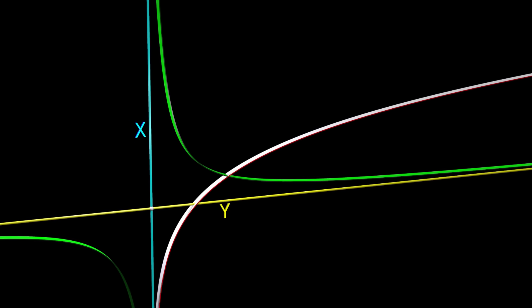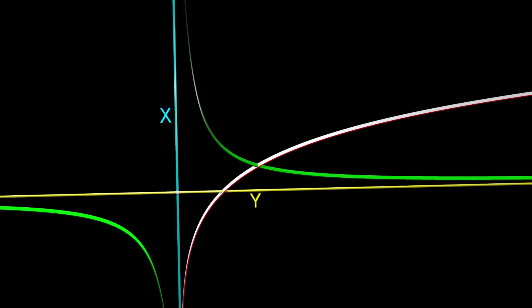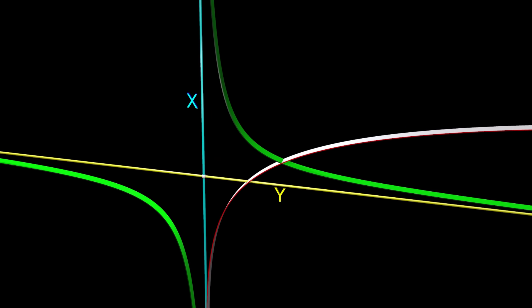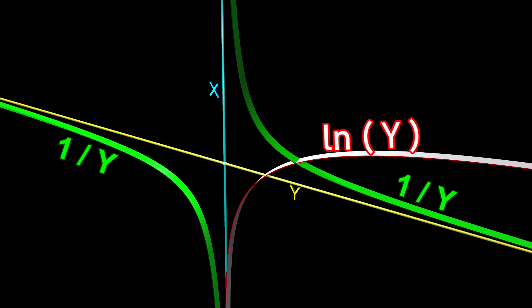But what about the portion of the function x equals 1 divided by y, where x and y are negative? All our previous relationships are still valid if we change the natural logarithm of y to the natural logarithm of the absolute value of y.